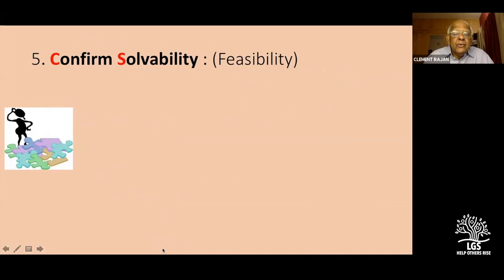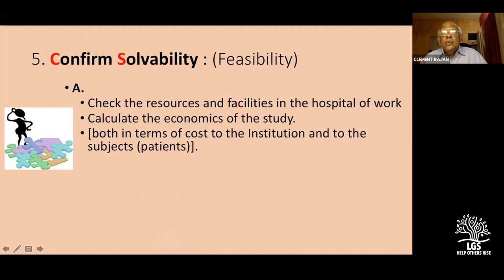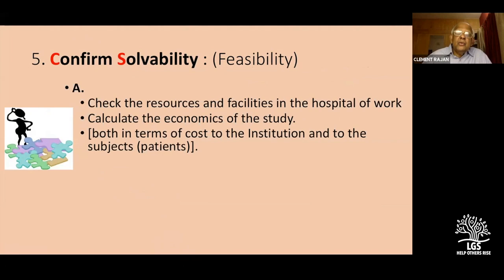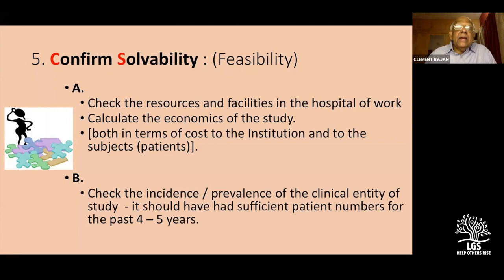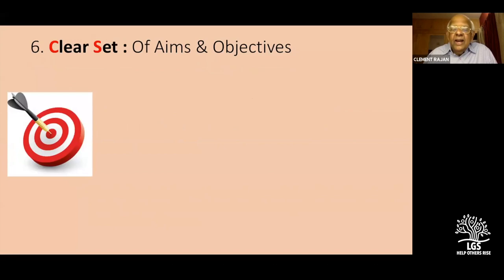Very importantly, confirm that it can be done. Make sure the topic is feasible in two aspects: first, the resources and facilities in the hospital; second, the economics of the study — both cost to the institution and cost to the subject. Some investigations are very costly — who bears that cost? Also, check the incidence and prevalence of that clinical condition so that you have sufficient patient numbers over the past four to five years to study your subject within the time frames of your PG studies.